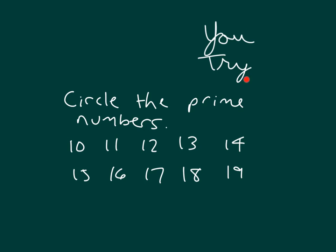Here it's your turn to try again. Circle the prime numbers. How about 10? Well, 10 is an even number, so we know we have 2 as one of the factors corresponding with 5, and every number has 1 and 10 as factors. So 10 has more than 2 factors.